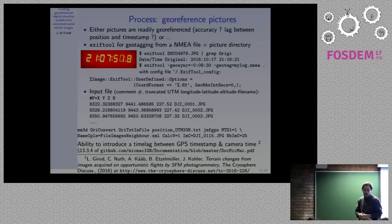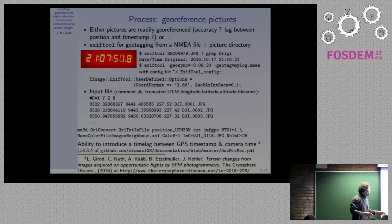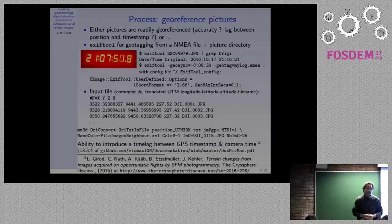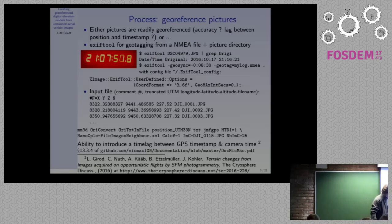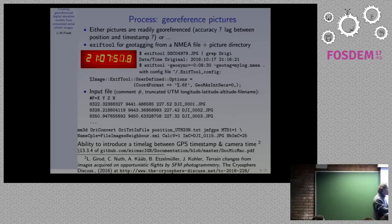Once we've got this set of geotagged images, I need to inform my processing software where each picture was taken. This must be done in a projected reference frame. In my case flying in northern Norway, that's UTM Zone 33 North. I convert all positions from my WGS84 NMEA log into a projected framework and create an ASCII file with longitude, latitude, altitude, and filename. I remove a large offset — northern Norway is about 7 million meters north — to avoid rounding errors in the processing. I then convert this text file into XML format for MicMac.